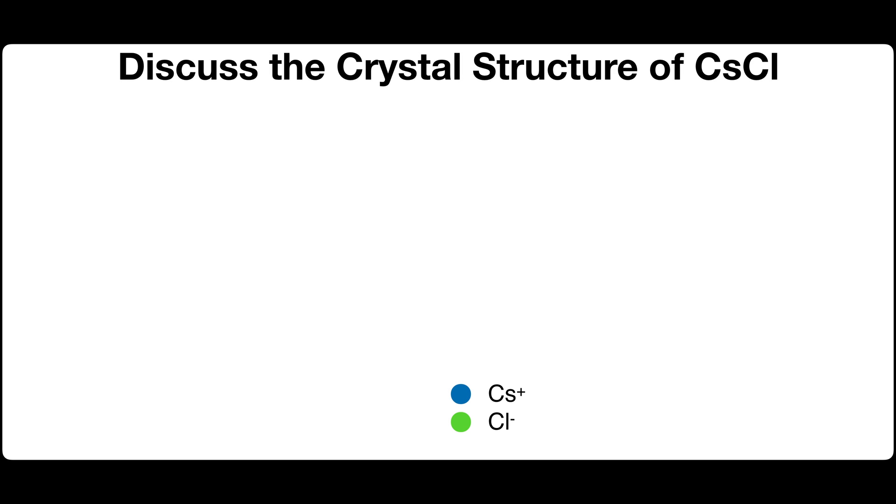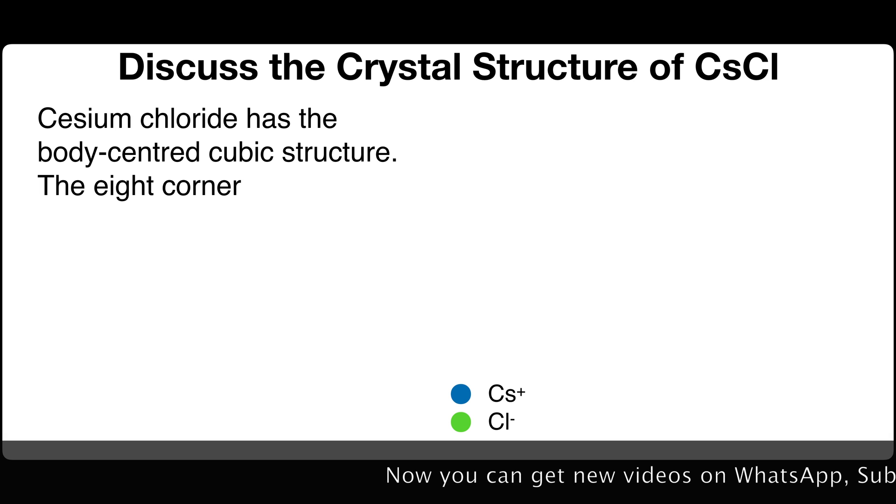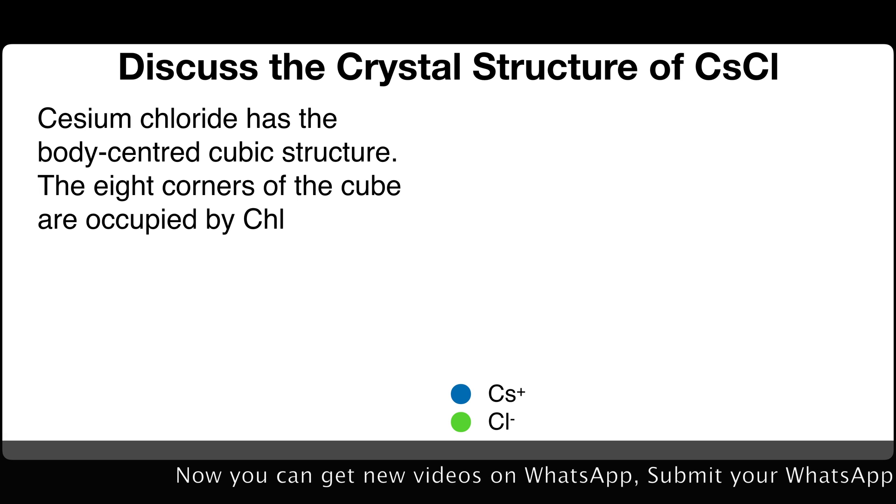Discuss the crystal structure of cesium chloride. Cesium chloride has the body-centered cubic structure. The eight corners of the cube are occupied by chloride ions.